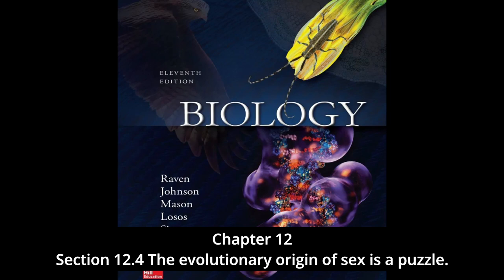Some lizards, fishes, and amphibians are capable of reproducing by parthenogenesis — their unfertilized eggs undergo a mitotic nuclear division without cell cleavage to produce a diploid cell, which then develops into an adult. Recombination can be destructive: if reproduction can occur without sex, why does sex occur at all? This question has generated considerable discussion, particularly among evolutionary biologists.